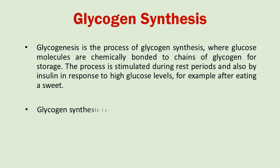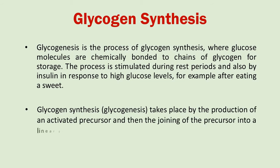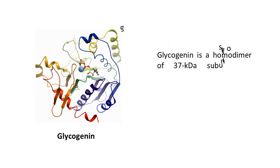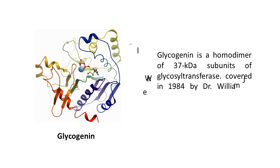Glycogen synthesis involves the creation of an activated precursor and then the linking of that precursor into the linear growing polymer. Glycogenin acts as a primer by polymerizing the first few glucose molecules, after which other enzymes take over. It is a homodimer of 37 kilodalton subunits and is classified as a glycosyl transferase. Glycogenin was discovered in 1984 by Dr. William J. Whelan, a fellow of the Royal Society of London and current professor of biochemistry at the University of Miami.